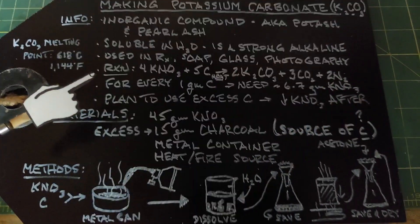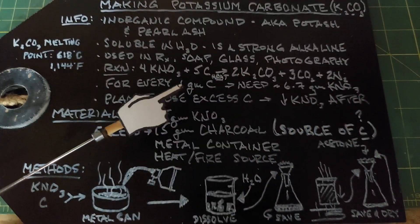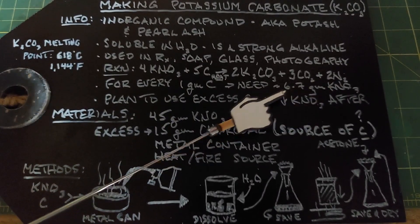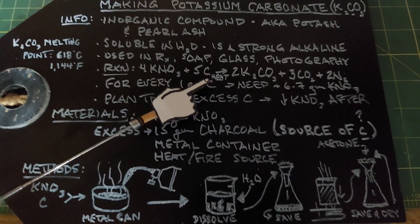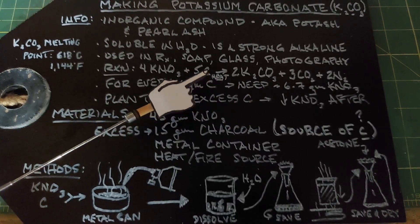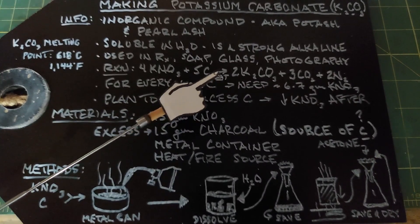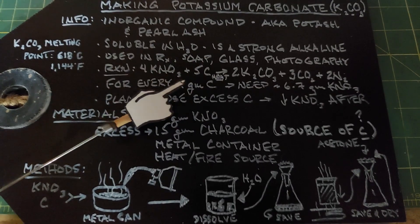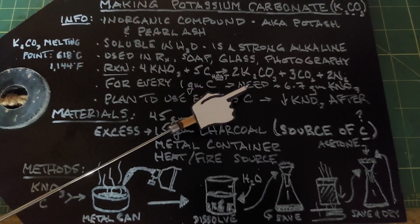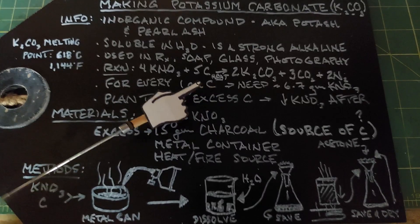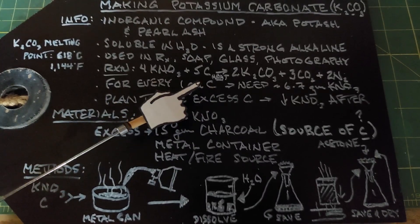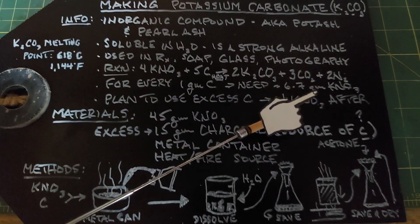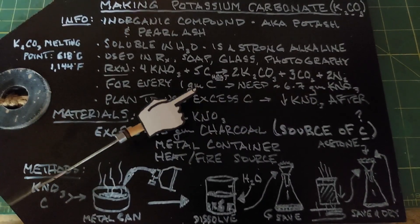Stoichiometrically, for every one gram of carbon you need around six to seven grams of potassium nitrate. The problem is that pure carbon is hard to come by, and typically charcoal is used for this reaction. Charcoal comes from burning wood, so there are other things mixed in, making it difficult to know exactly how much carbon you have. Burning sugar also works, but I'm going with charcoal.